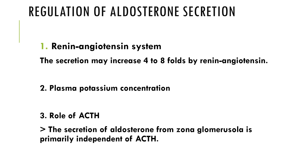Regulation of aldosterone secretion involves three factors: the renin-angiotensin system, plasma potassium concentration, and the role of ACTH. The principal function of aldosterone is to maintain extracellular fluid volume by conserving body sodium. The secretion of aldosterone is influenced by changes in circulating fluid volume sensed by the kidney. Signals arising from the kidney increase aldosterone secretion when ECF volume is decreased, and vice versa.